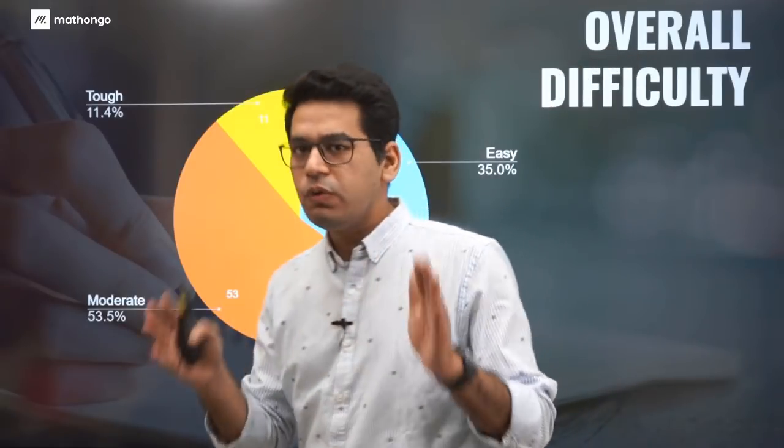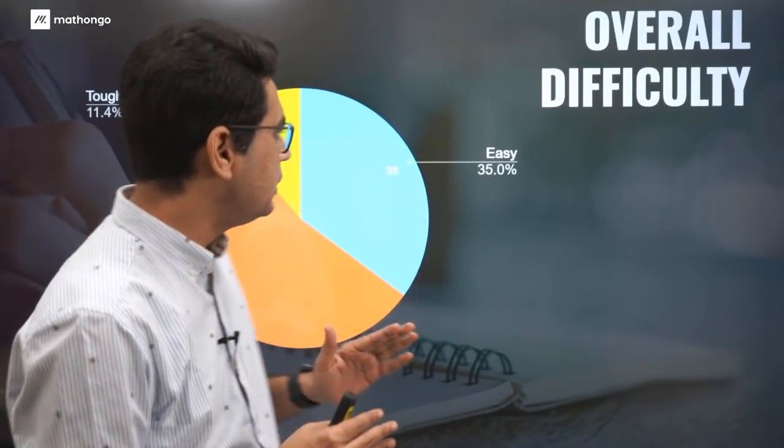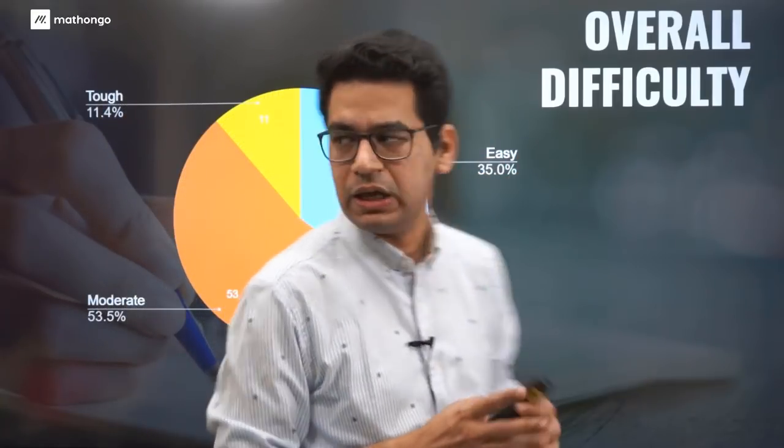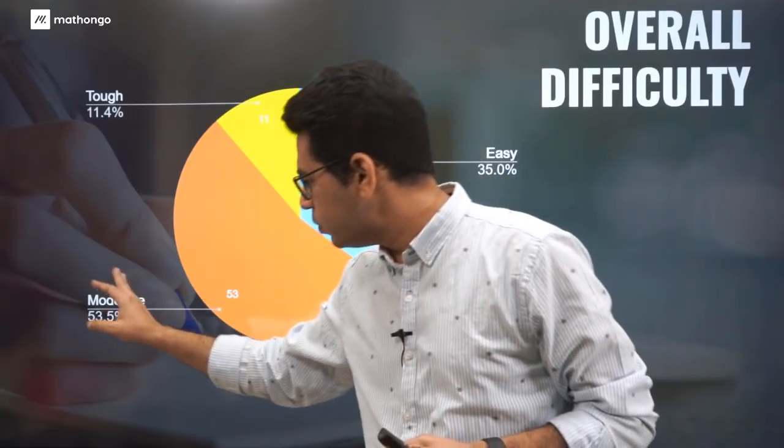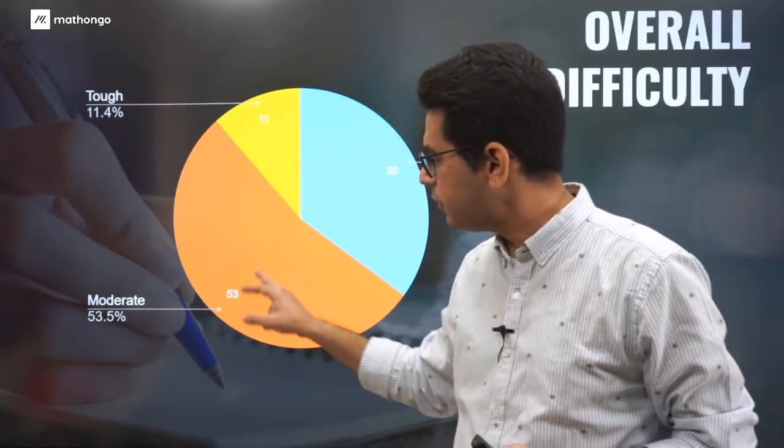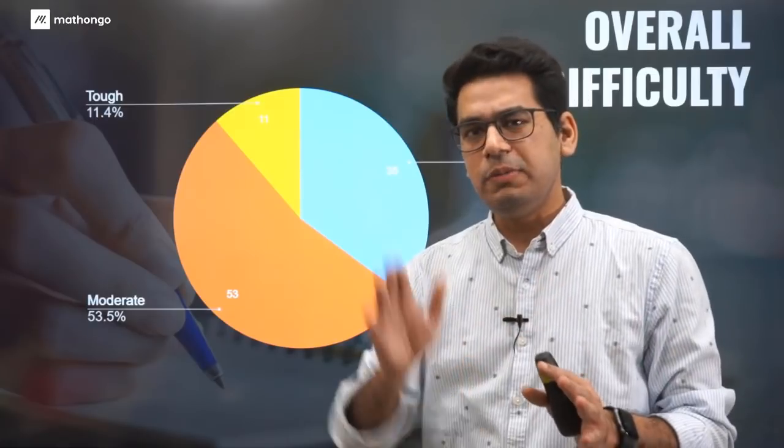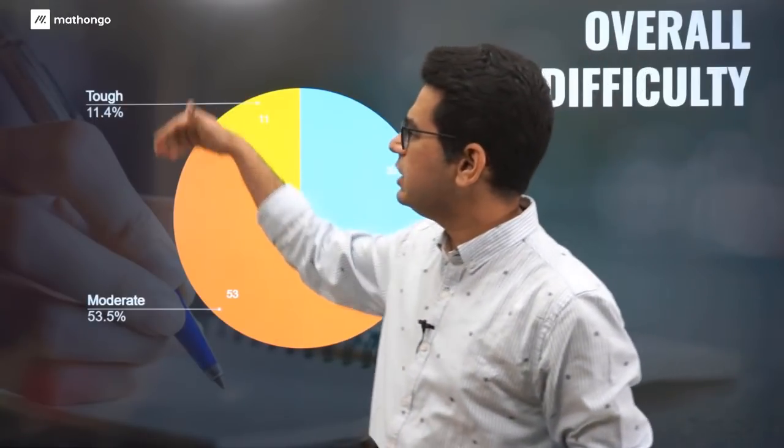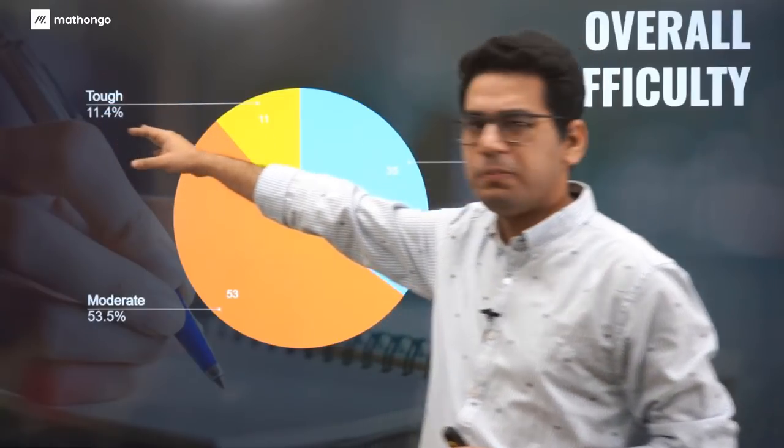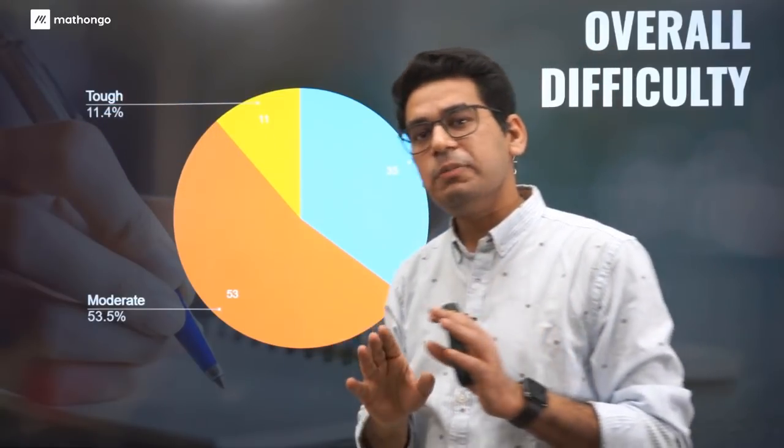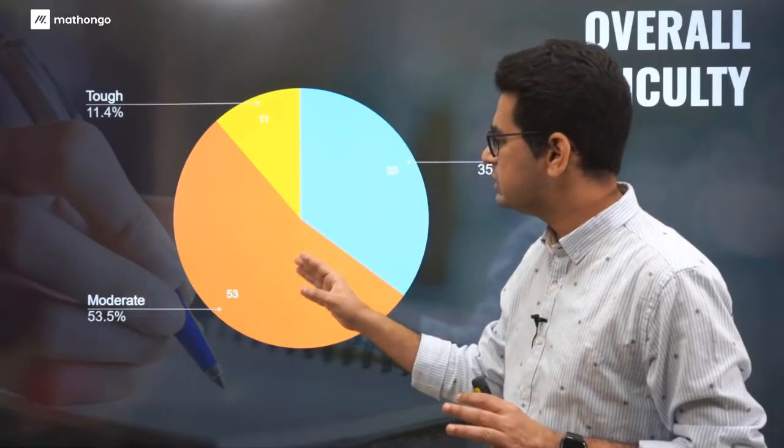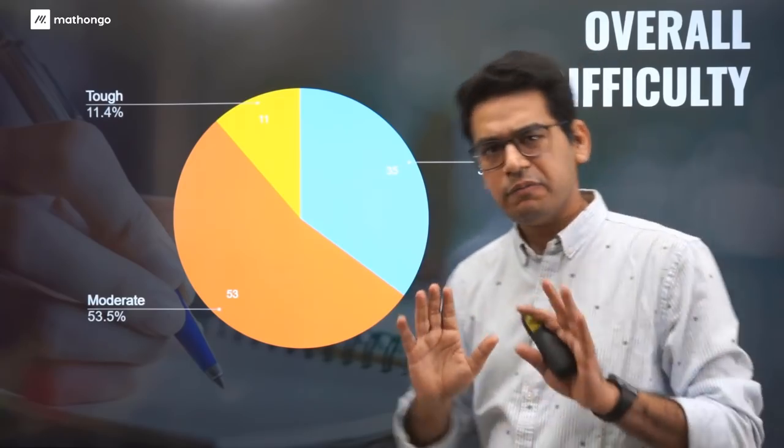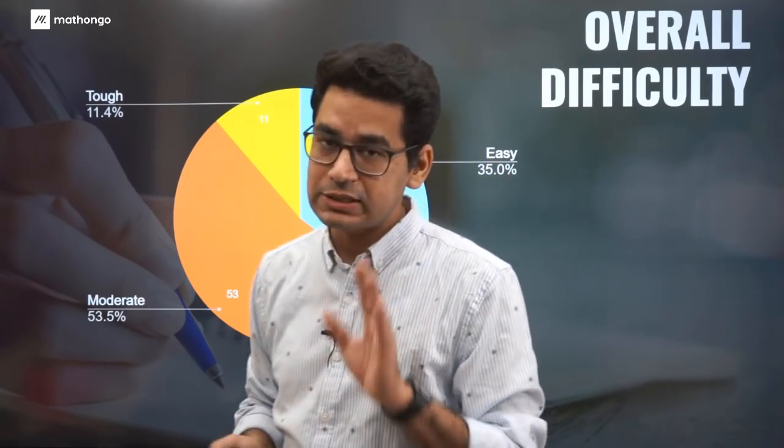If we talk about the difficulty of the overall exam, easy consists of 35% for physics, chemistry and maths. Moderate is most of the paper, 53%, which is almost like JEE Main difficulty or slightly below. Tough is just 11%, slightly above JEE Main. So you can see that most of the paper actually lies in the moderate region with the biggest chunk being moderate 53% and easy 35%.